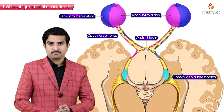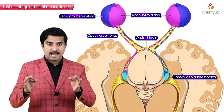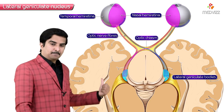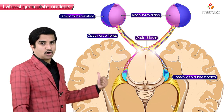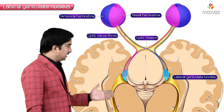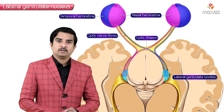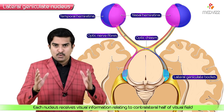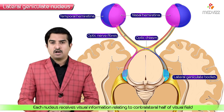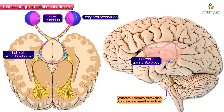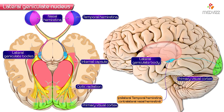As a result of hemi-decussation of the optic fibers at the optic chiasm, each lateral geniculate nucleus receives axons from the ipsilateral temporal hemiretina and the contralateral nasal hemiretina. Each nucleus therefore receives visual information related to the contralateral half of the visual field. The lateral geniculate nucleus then sends fibers via the retrolenticular part of the internal capsule and the optic radiation to reach the primary visual cortex of the occipital lobe, known as Brodmann area 17.